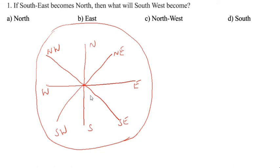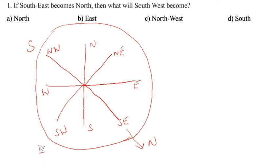They have given that South-East becomes North. So this North comes to this side, and South goes this side. After that, South-West is there, so East comes this side, and West goes this side. So we got these four directions.